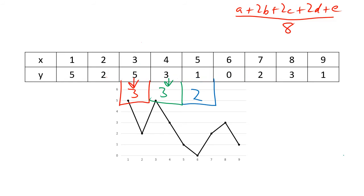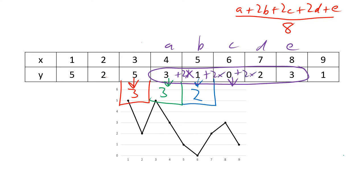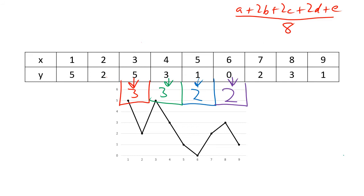In purple, the next loop is a, b, c, d, e centered here. So it's a + (2×1) + (2×0) + (2×2) + 3. Add them all up, divide by 8, you get 1.5, which rounds to 2. You can see why spreadsheets become a nightmare as soon as your data gets even slightly bigger and these formulas get huge. In orange, the last loop centered here gives: 1 + (2×0) + (2×2) + (2×3) + 1 lot of e, divide by 8 — you get 1.5, so that's 2.